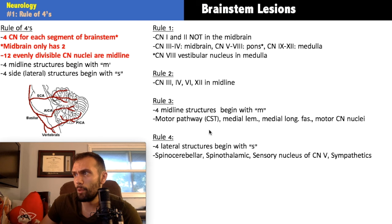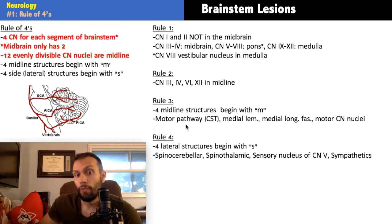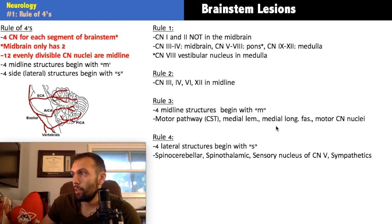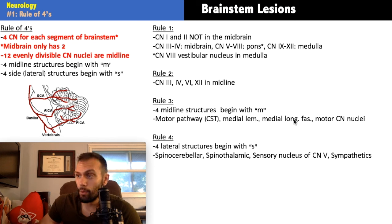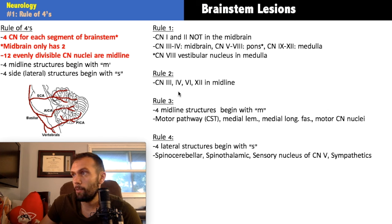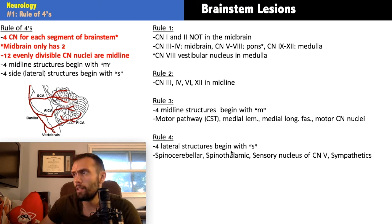The big midline structures to remember are: the motor pathways — your corticospinal tract, so a midline lesion gives upper motor neuron signs; the medial lemniscus, part of the dorsal column/DCML pathway carrying vibration and proprioception; the medial longitudinal fasciculus, which is involved in internuclear ophthalmoplegia; and the motor nuclei — cranial nerves three, four, six, and twelve all have motor components.